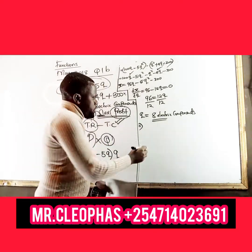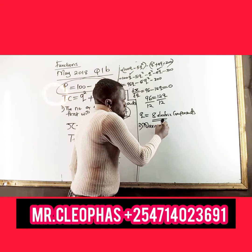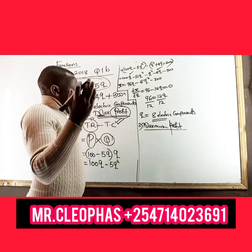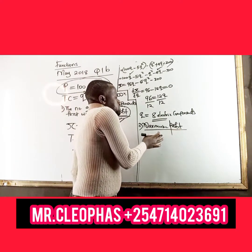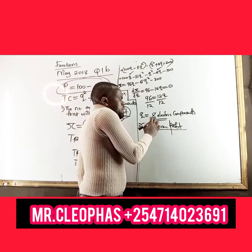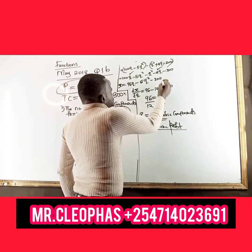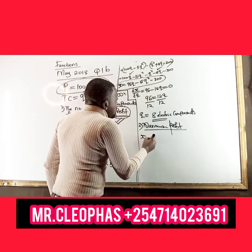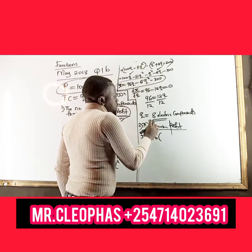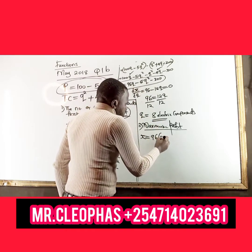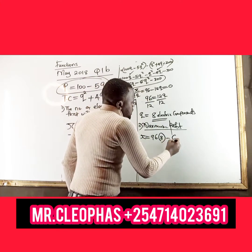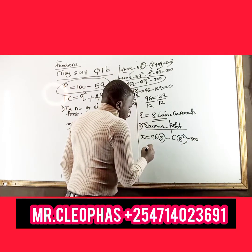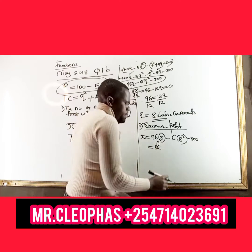Roman 2 requires the maximum profit. Knowing the profit function, substitute Q equals 8 wherever Q appears. So profit equals 96 times 8 minus 6 times 8 squared minus 300. This gives 768 minus 384 minus 300, and the maximum profit is 84 shillings.